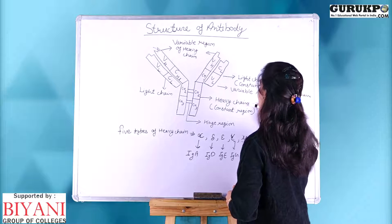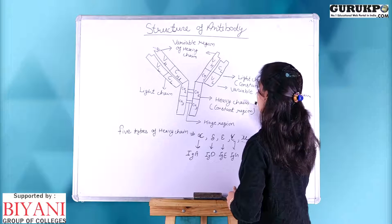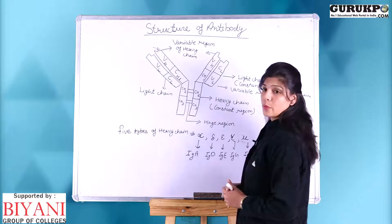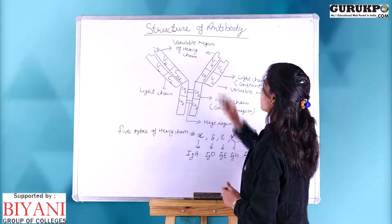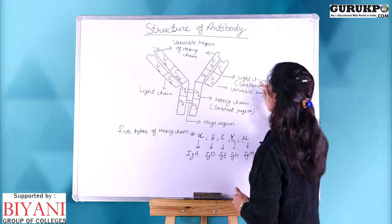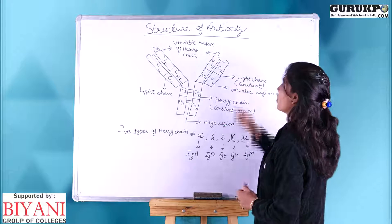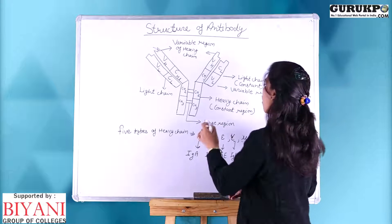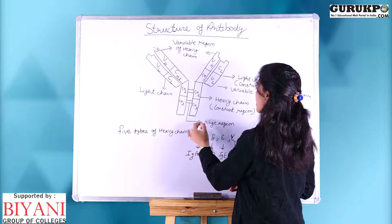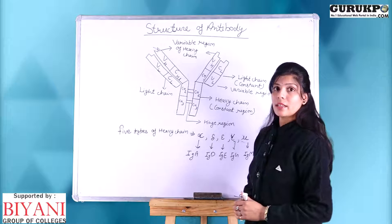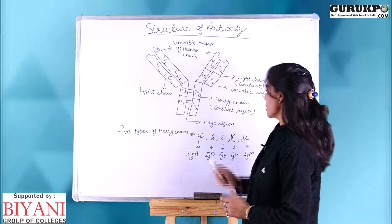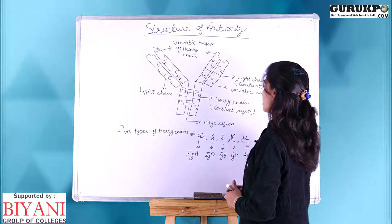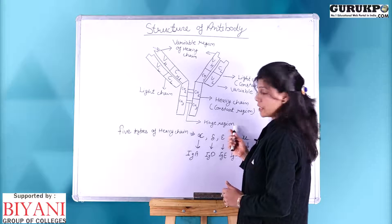In the heavy chain region, three constant regions are present and one variable region is present. All the chains are joined together by disulfide bonds at a specific site, and this region is called as the hinge region.